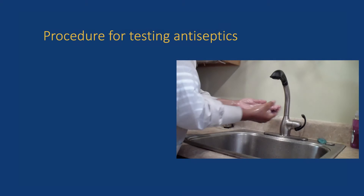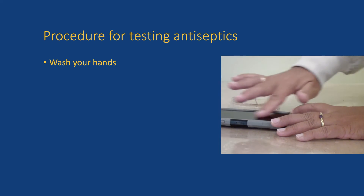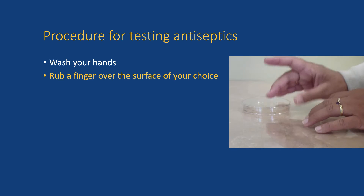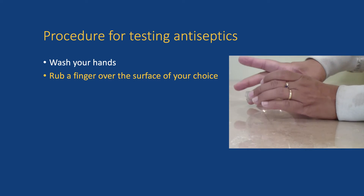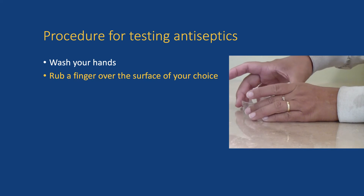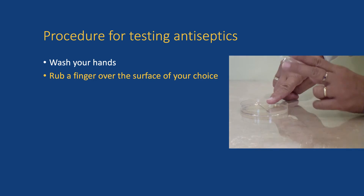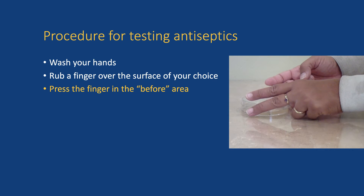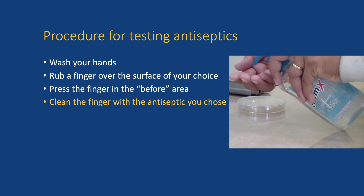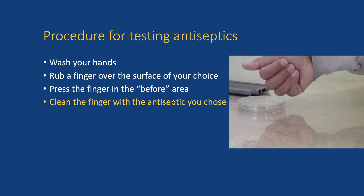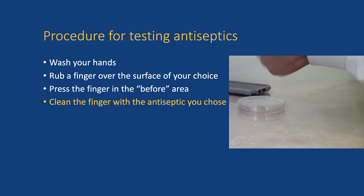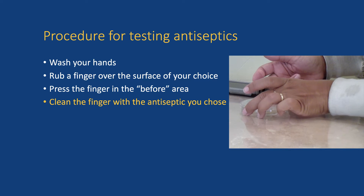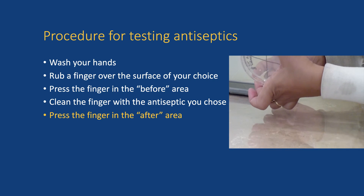For an antiseptic, again start by washing your hands well. Rub the surface of your choice — in my case, my phone. Press your finger in the before area, then clean your finger with the antiseptic of your choice. I used hand sanitizer. Now press your finger in the after area.